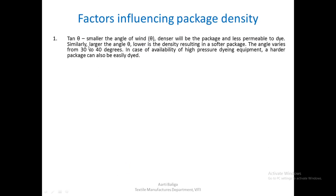Now that we know how package density becomes an important parameter when considering a package for dyeing, let us see what factors during winding will affect this package density. The first factor is tan theta, or the angle of wind. Smaller the angle of wind, denser will be the package. The angle that the coil makes with the edge of the package — if it becomes smaller, it will make the package more dense and less permeable to dye.